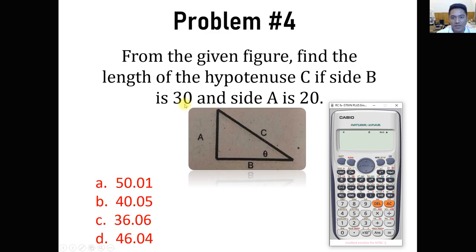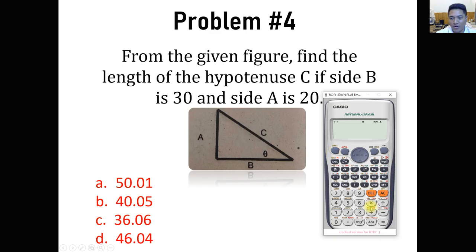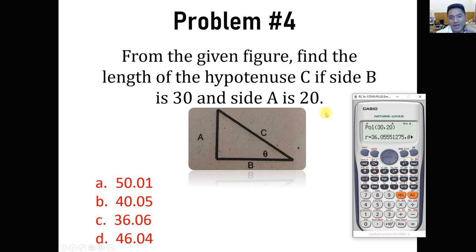If we convert 30 and 20 — where 20 is Y because it's the vertical side, and B (30) is X — we input X as 30 and Y as 20 into the Pol function. The value of R from the polar conversion will be the hypotenuse. That gives us 36.06. So the answer is letter C.